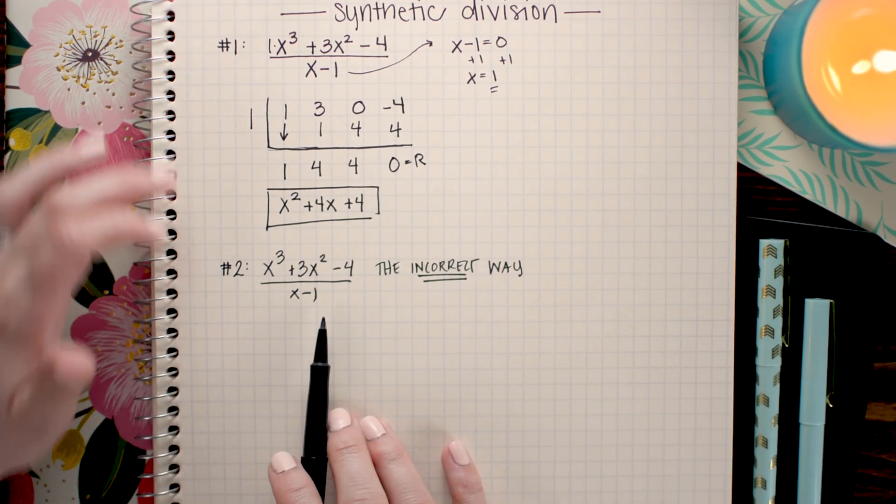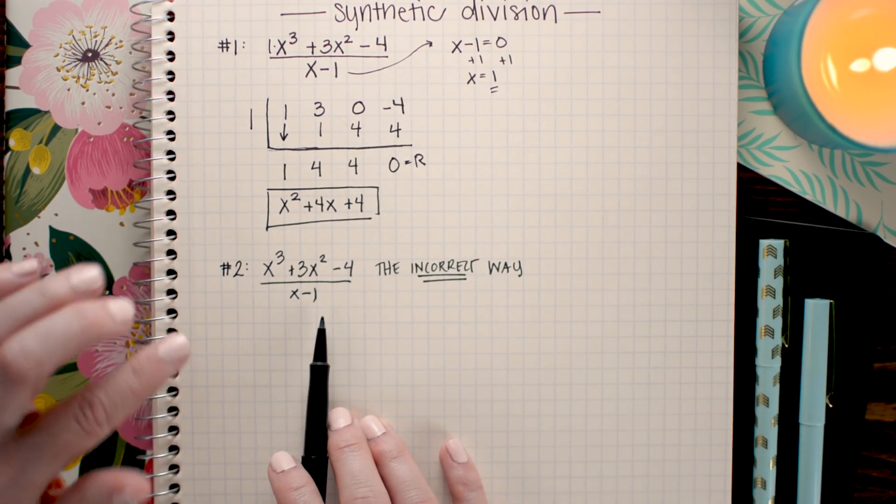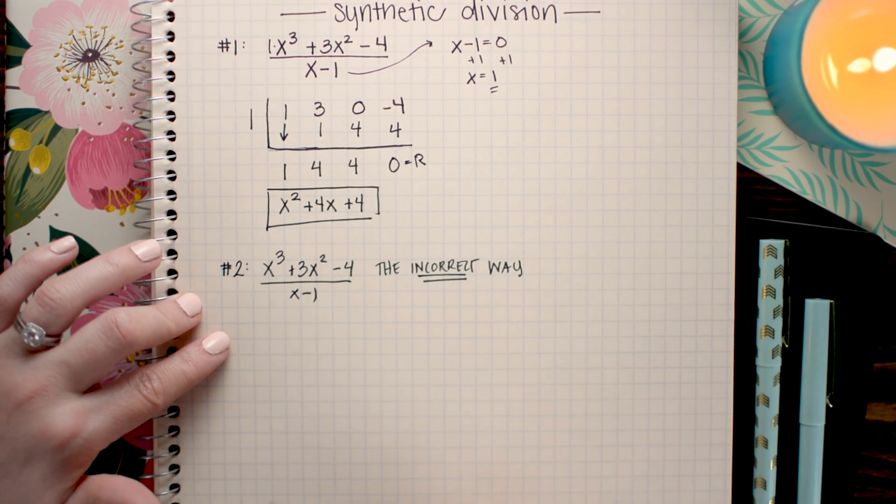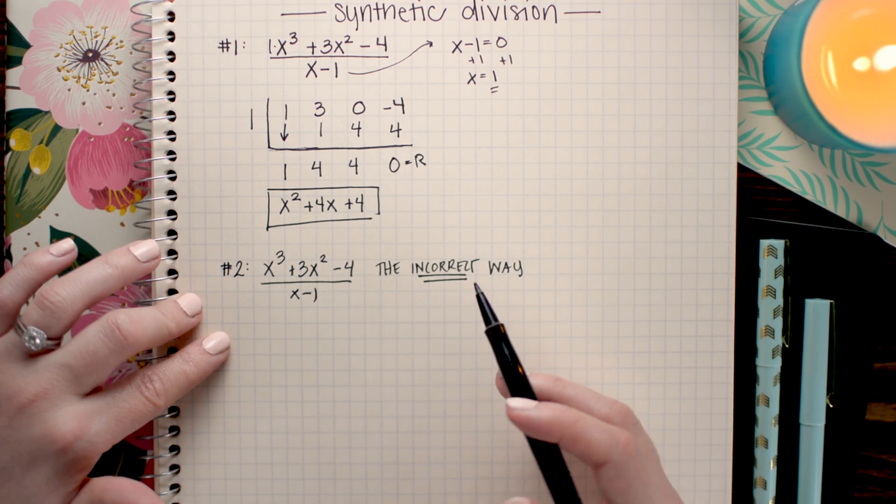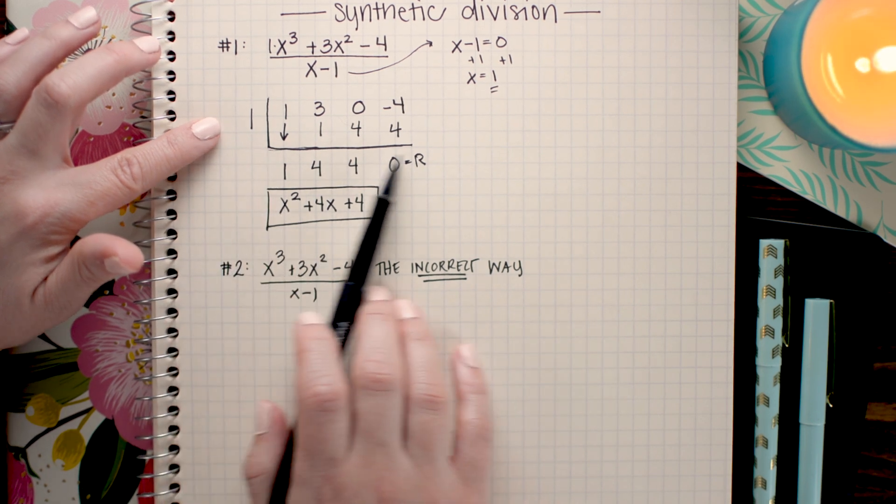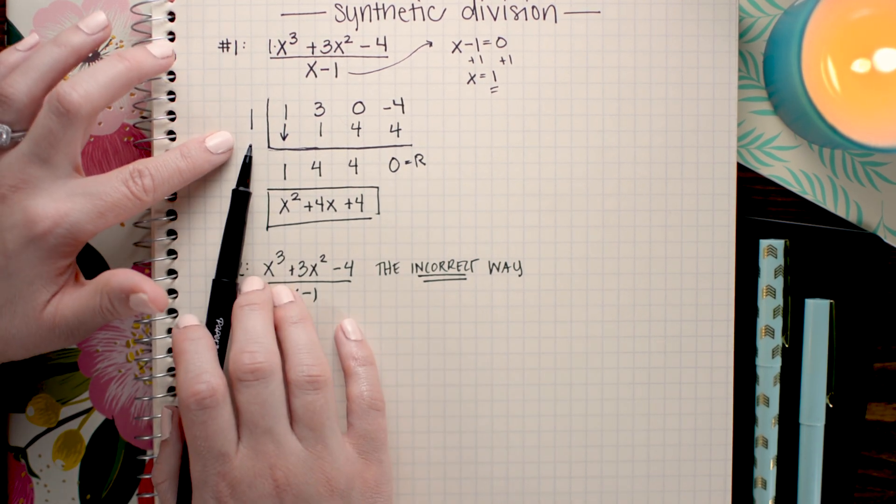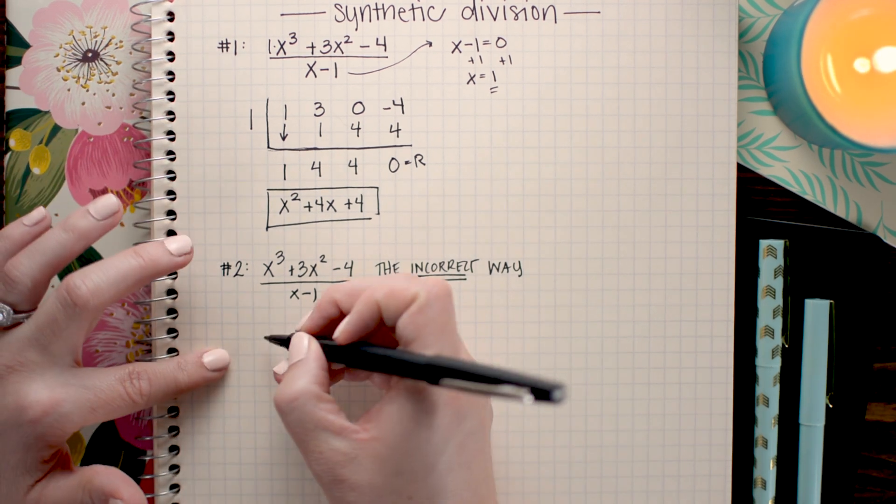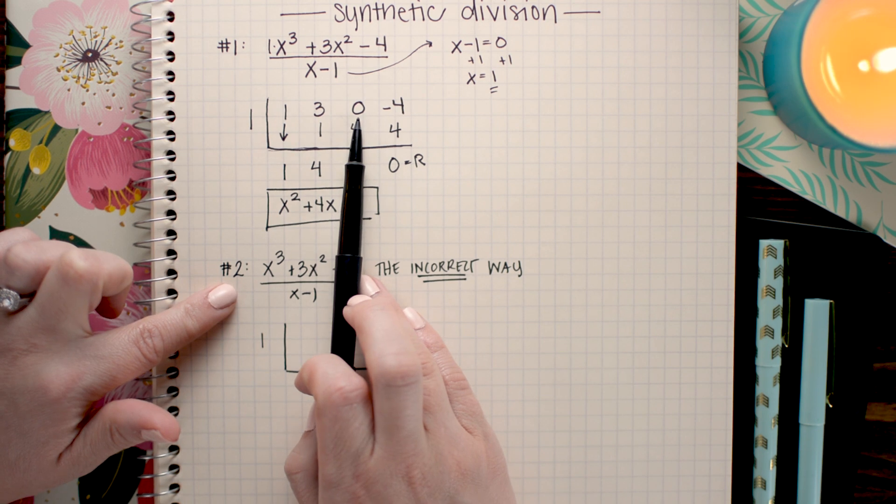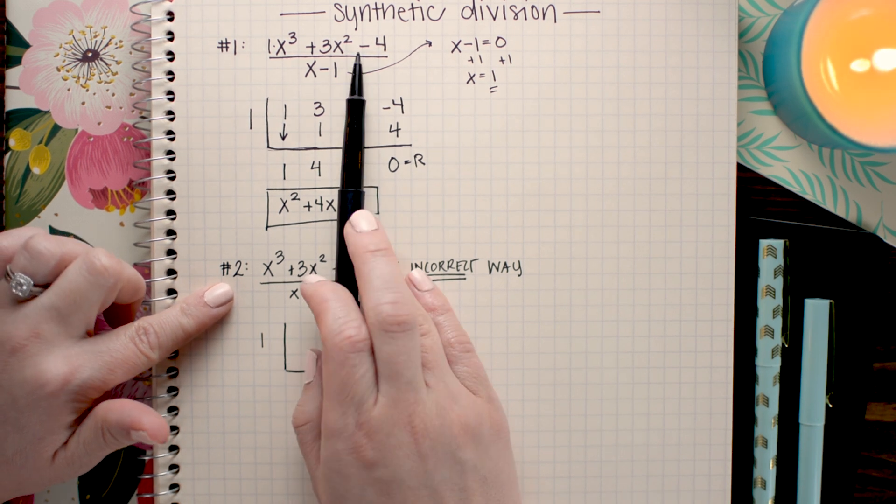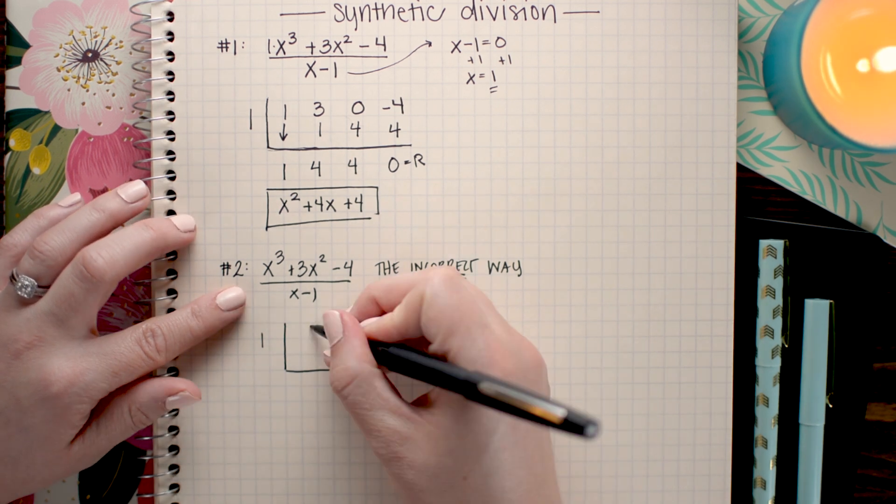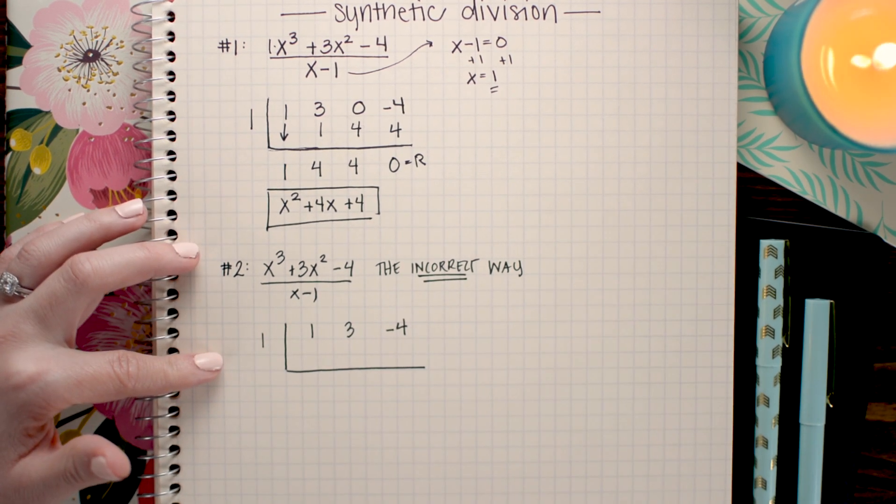In this next problem, I am going to do the exact same problem over again, but this time I am intentionally going to make a mistake just so I can show you what happens and how you can avoid that mistake. So I'm going to set up the problem with my upside down division and place a 1 on the outside. And the mistake I'm going to make is I'm going to forget to place this 0 for the 0x. So I'm just going to go ahead and write 1, 3, and negative 4 down.